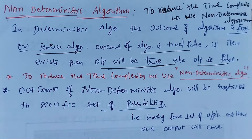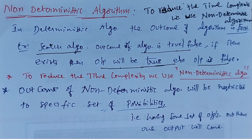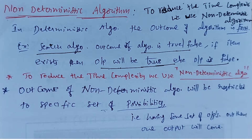What do you mean by non-deterministic algorithm? In a deterministic algorithm, the outcome of the algorithm is fixed. Generally, if you take any deterministic algorithm, the outcome is fixed.